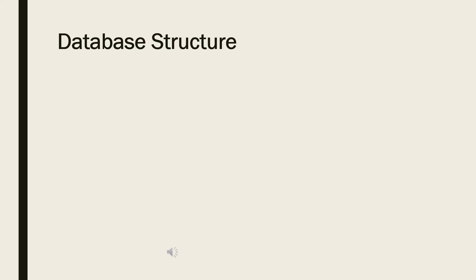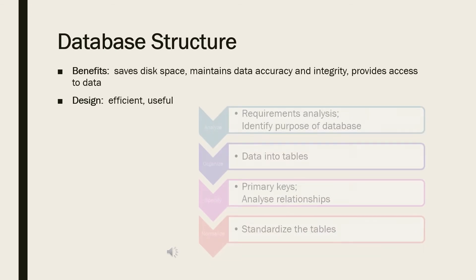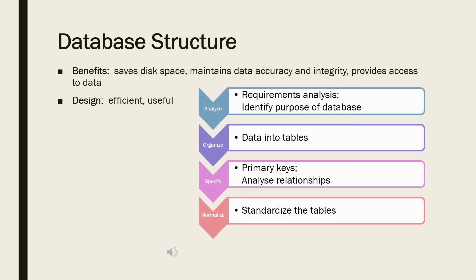A well-structured database saves disk space by eliminating redundant data, maintains data accuracy and integrity, and provides access to the data in useful ways. Designing an efficient database involves these phases: requirements analysis, or identifying the purpose of your database; organizing the data into tables; specifying primary keys and analyzing relationships; and normalizing to standardize the database.